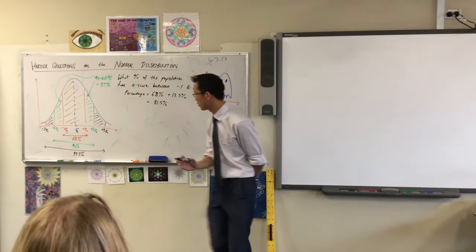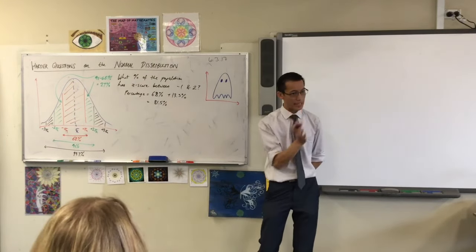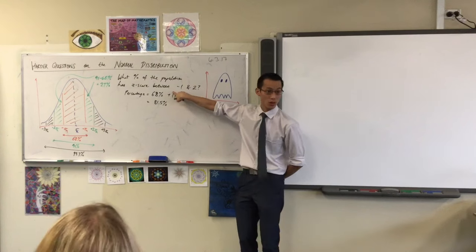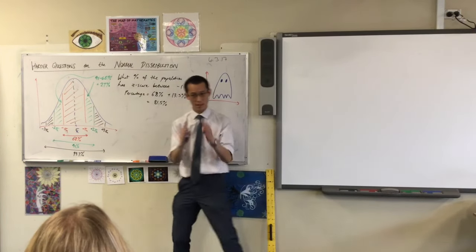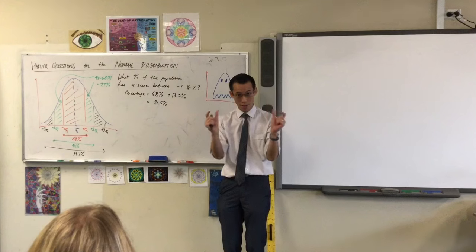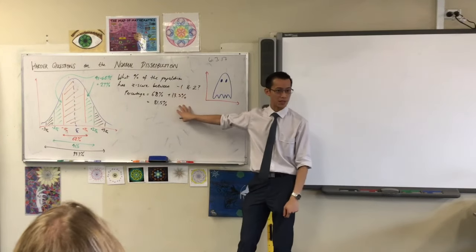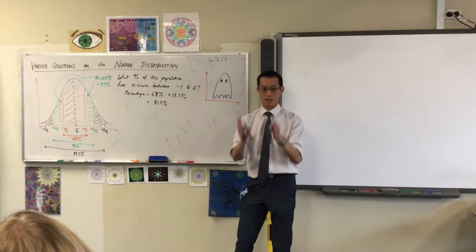Okay, so that's not too difficult. But you can ask for any range of different z-scores, and you can work out in exactly the same way we did with a bit of subtraction. Sometimes you have to halve things.